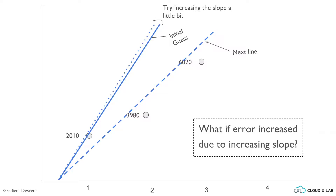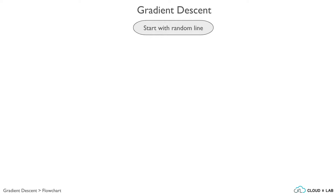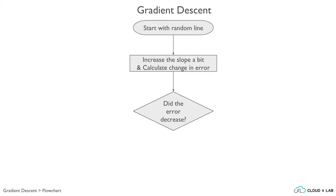Gradient means the rate of change and descent means going down — we go to the side where the gradient of error is going down. Since a line is defined by slope and its distance from the center called intercept, we do the same tweaking for the intercept too. Since gradient descent is the core algorithm in machine learning and deep learning, we would spend some more time on this. We start with a random line — here the line is our model because using this line we will be doing the prediction of salaries. We then slightly increase the slope and calculate the change in error, consulting all the training instances.